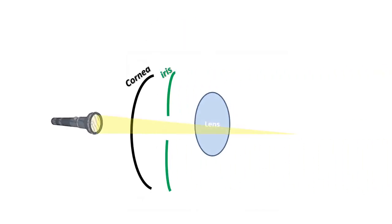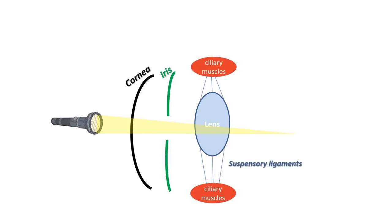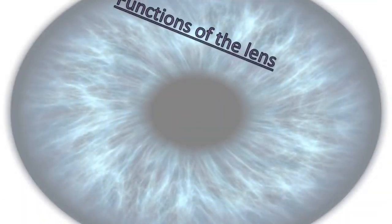Light enters the eye through the cornea, it travels through the hole in the center of the iris, which is called the pupil, and then through the lens. The lens is kept in place by the suspensory ligament of the lens. This ligament attaches to the lens at its equator and connects it to the ciliary muscles.